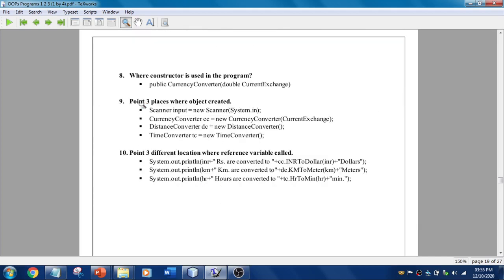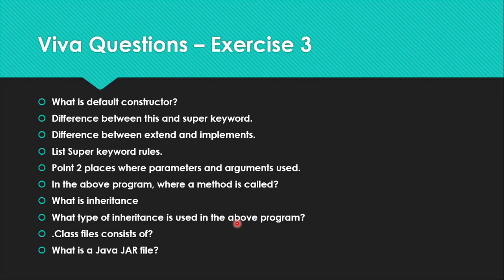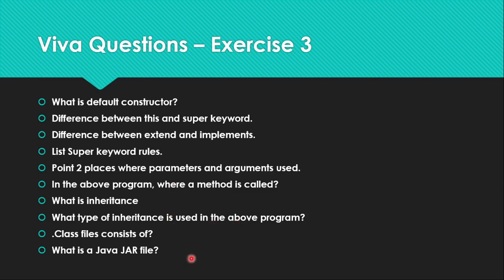I've given the answers — you can also search and research to find different points. What is a constructor? Also, places where objects are created: refer to wherever we've used the 'new' operator in the program, and check where we are calling the reference variable. Now we are in Exercise 3, and here are the viva questions: default constructor, difference between 'this' and 'super', extends vs implements, super keyword usage, places where arguments are used, the method where we're following inheritance, what type of inheritance is used in the program, what a .class file consists of, and the use of JVM.